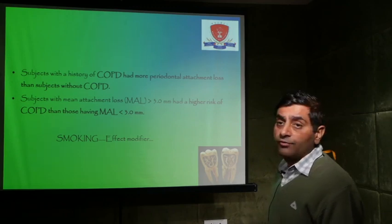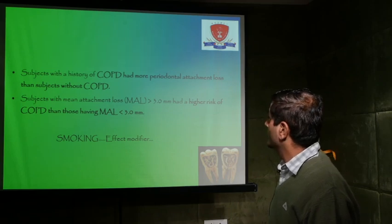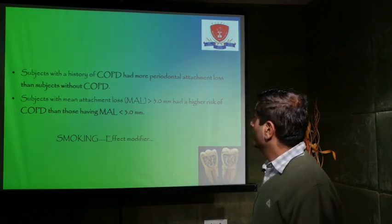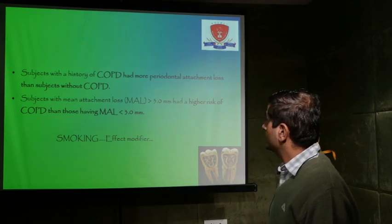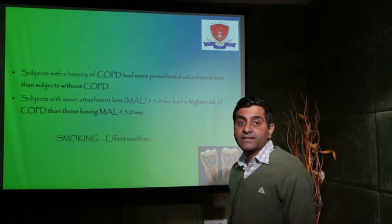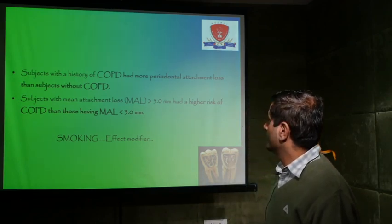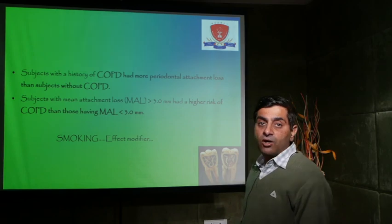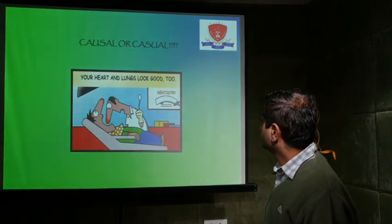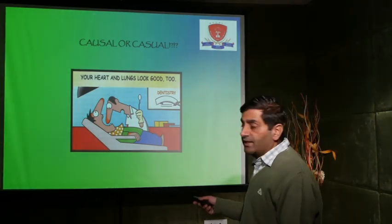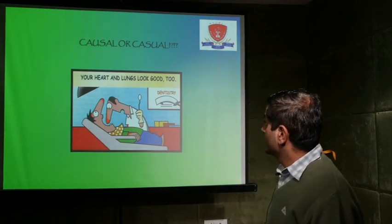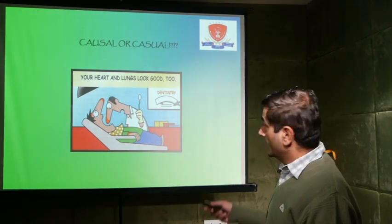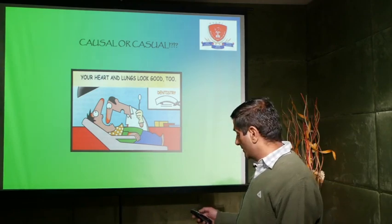Subjects with a history of chronic obstructive pulmonary disease had more periodontal attachment loss compared to subjects without COPD. Subjects with mean attachment loss greater than 3 mm had a higher risk for COPD compared to those with mean attachment loss less than 3 mm. Smoking also modifies this effect, as it is an independent risk factor for periodontal disease. By studying these relationships, we can now understand that the relationship between systemic health and oral health is not casual — it is causal. Thank you very much.